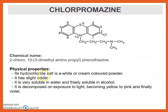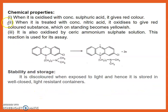Physical property: its hydrochloride salt is a white or cream-colored powder. It has a slight odor. It is very soluble in water and freely soluble in alcohol. It is decomposed on exposure to light, becoming yellow to pink and finally dark-colored. Chemical property: it is oxidized with concentrated sulfuric acid to give a red color. When treated with concentrated nitric acid, it is oxidized to give a red-colored substance which becomes yellowish on standing.